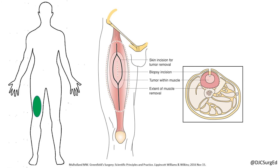Treatment goal is surgical resection with negative margins. Post-op radiation therapy should be considered in patients with close margins less than 1 cm or microscopically positive margins on bone, major vessels, or nerves. The biopsy site should be excised and en bloc with the definitive surgical specimen. Complete tumor resection is the primary prognostic factor for local recurrence.